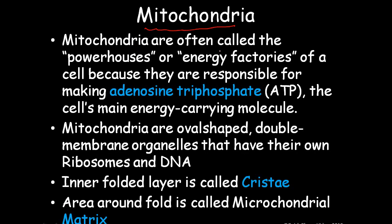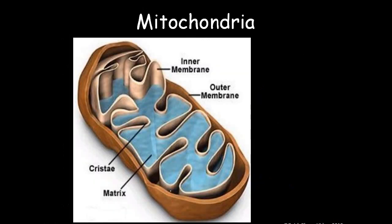Mitochondria are often called the powerhouse or energy factory of the cell, because they are responsible for making ATP — adenosine triphosphate — the cell's main energy-carrying molecule. Mitochondria are oval-shaped, double-membrane organelles that have their own ribosomes and DNA. The inner folded layer is called cristae, and the area around the folds is called the mitochondrial matrix.